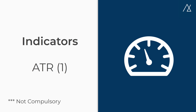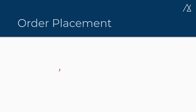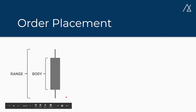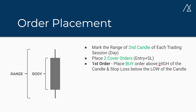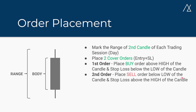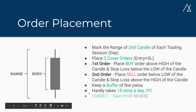Let's understand order placement. The difference between open and close is the body of the candle, and the difference between high and low is the range of the candle — we are concerned with the range only; the rest is just noise. Mark the range of the second candle of each trading day and place two cover orders — entry and stop loss — in each order. For the first order, place a buy order above the high of the candle with the stop loss below the low. For the second order, place a sell order below the low with the stop loss above the high. Always keep a buffer on both sides.